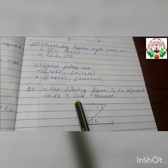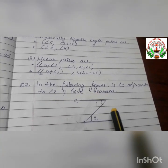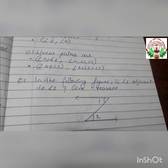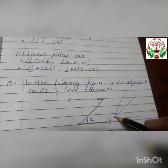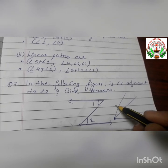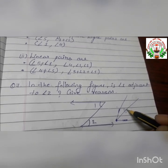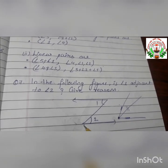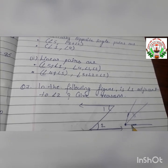In the following figure, is angle 1 adjacent to angle 2? Adjacent angles are those which have a common vertex, common arms, and whose non-common sides are on opposite sides of the common arm. Here, angle 1 and angle 2 do not have a common vertex, and their non-common sides are not on opposite sides. So the answer is no.